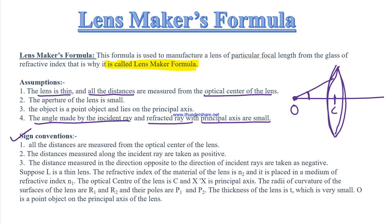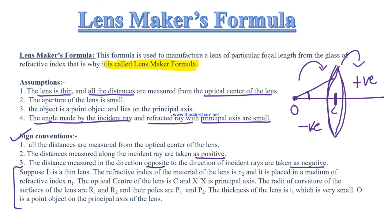Now the sign conventions: all distances are measured from the optical center. The distances measured along the incident ray are taken as positive. In the opposite direction, distances are taken as negative. So when you place the object on the left side, u will be negative. On the opposite side, all sign conventions are positive.